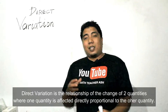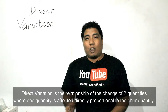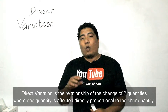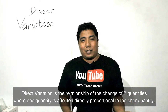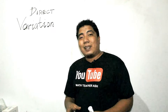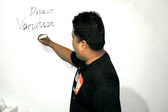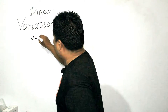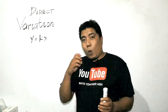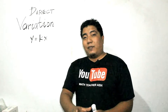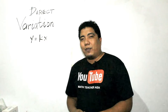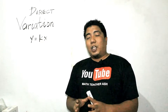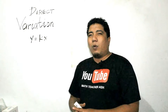Direct variation is the relationship of the change of two quantities in which one is affected directly proportional to the other quantity. The mathematical statement denoted by this variation is y is equal to kx, where x and y are the variables or the quantities, and k is the constant of variation. The constant of variation is a fixed value.